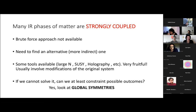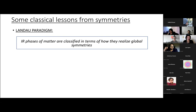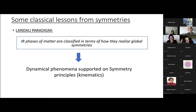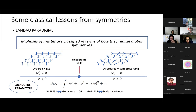Let me start by going over very briefly some classical lessons we got from symmetries over the years. A crucial notion central to this talk is the so-called Landau paradigm, which can be stated by saying that IR phases of matter are classified in terms of how they realize global symmetries. This is quite powerful because it allows us to infer predictions about dynamical phenomena — which is usually hard or impossible to access directly — based on kinematic observations. A typical example: in a model of spins on a lattice, as we vary some relevant parameter, we may land in a phase where the spin symmetry is broken.